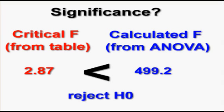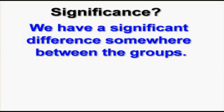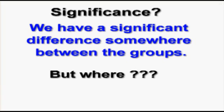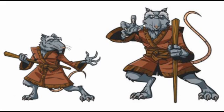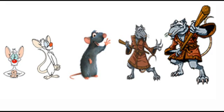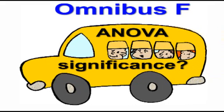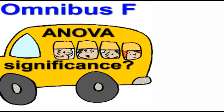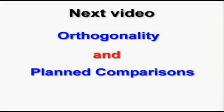Remember, all null hypotheses state that there is no significant difference between groups. Now that we know there is a significant difference somewhere between the groups, we need to figure out where. This significant F — also called omnibus F, meaning overall — only tells us that a difference exists. We don't know if it's between Splinters, Remys, Pinkies, and so on. That's where planned comparisons come into play, which will be covered in the next video, along with ensuring the planned comparisons are all orthogonal to each other.